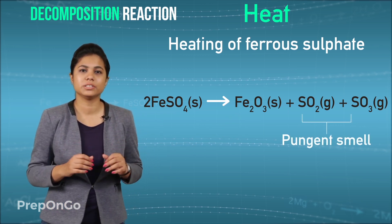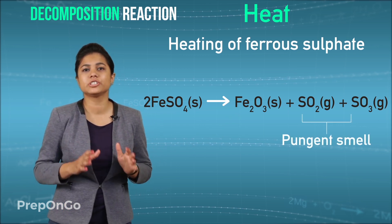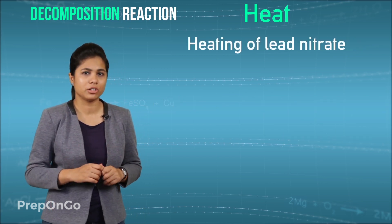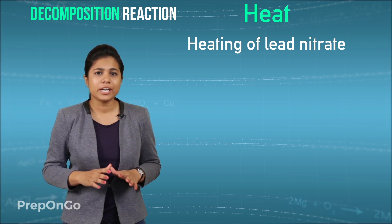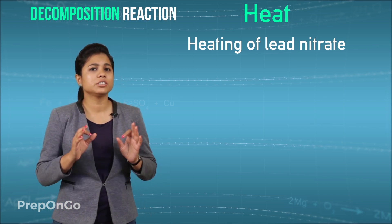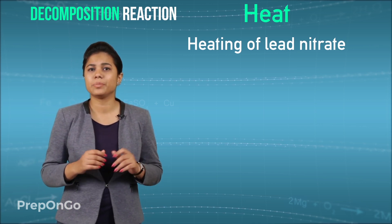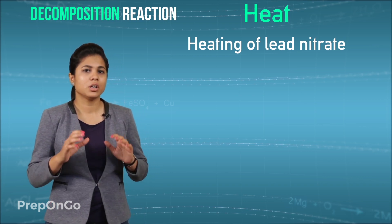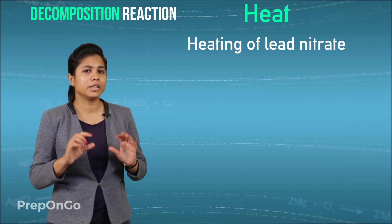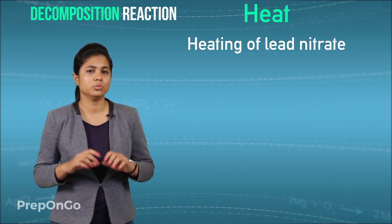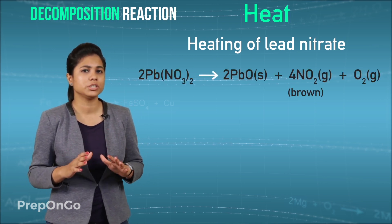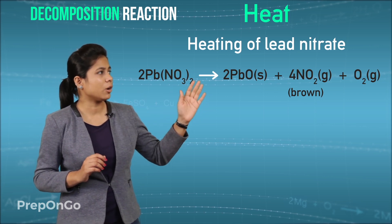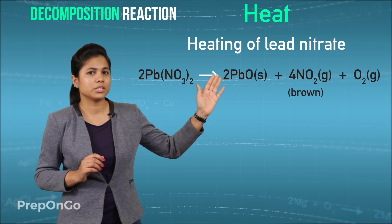There is evolution of a pungent smelling gas which is due to burning of sulphur. Now let's see what happens when lead nitrate is heated. There is an evolution of an irritating gas with brown fumes. Those brown fumes are of nitrogen dioxide and there is also a deposit of a yellow color residue which is of lead oxide. So the reaction is when lead nitrate is heated we get lead oxide, nitrogen dioxide and oxygen.